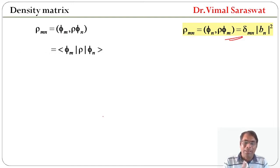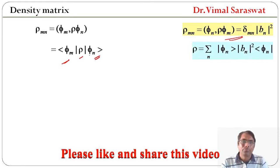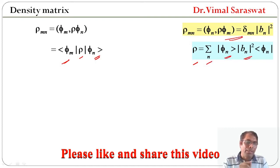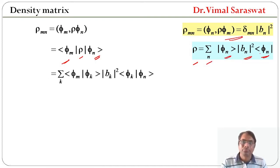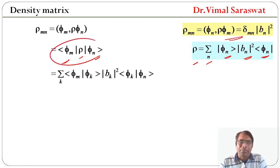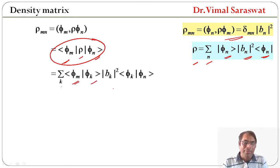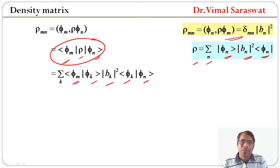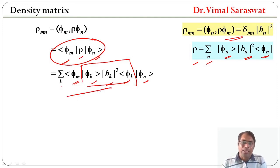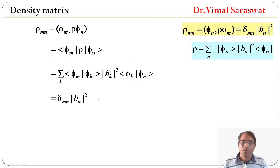In bracket notation rho_mn will be <phi_n | rho | phi_n>, and rho equals sigma_n |phi_n> |b_n|^2 <phi_n|. This can be written as sigma_k <phi_m | phi_k> |b_k|^2 <phi_k|, giving rho_mn equal to delta_mn |b_n|^2.